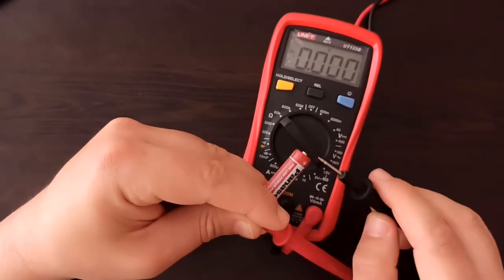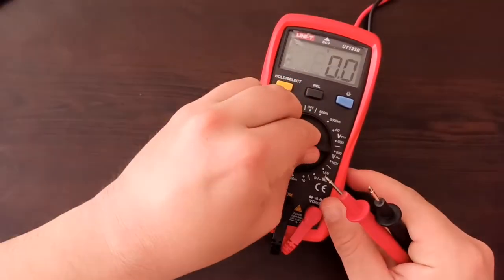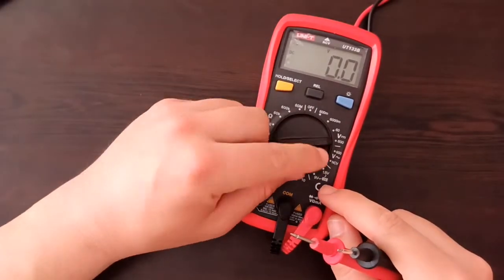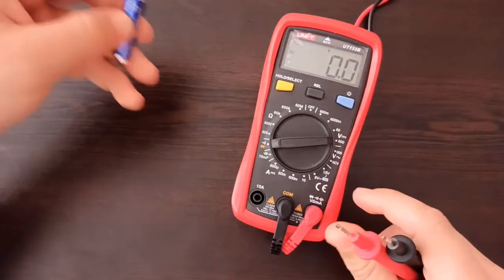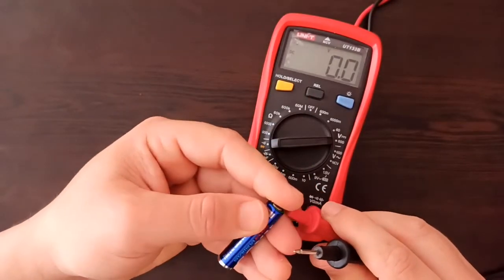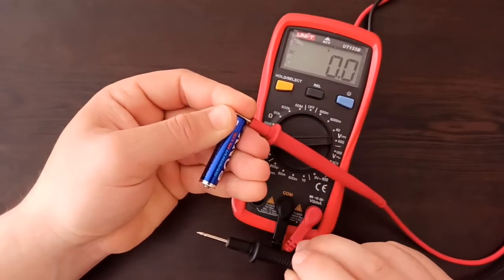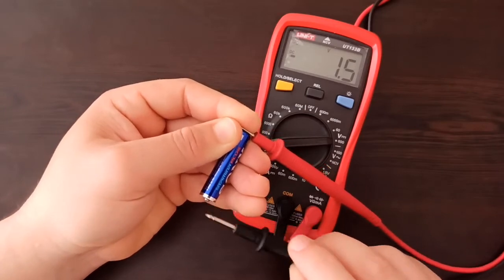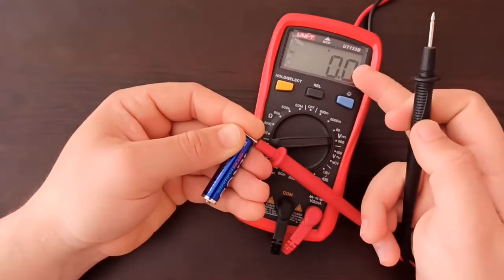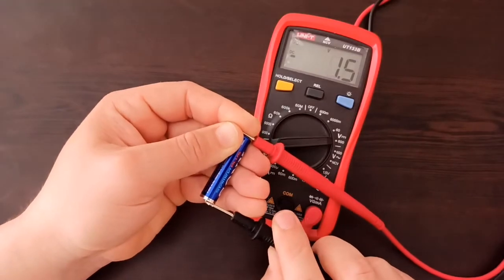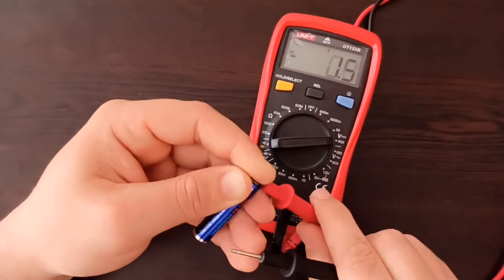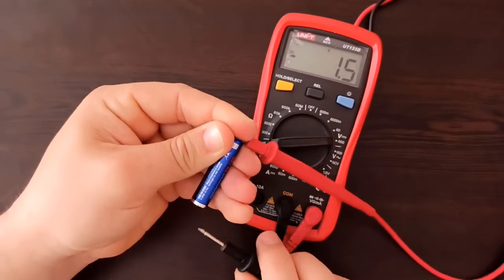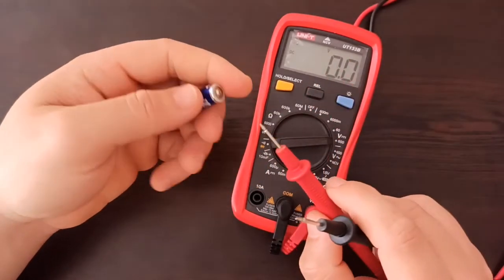Also, if you don't have this battery function, you can put it on 600 volts and still you will be able to measure. I'm going to reverse again the polarity. See, it's 1.5—of course now the range is different, that's why it's showing only 1.5, but still it's showing the minus sign for the reversed connection.